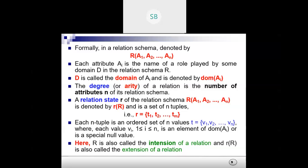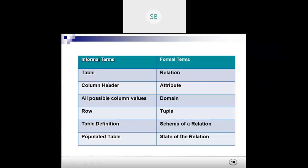To clarify the terminology: formally 'relation' and informally 'table' mean the same thing. Attribute formally equals column header informally. Domain formally means all possible column values informally. Tuple formally equals row informally. Table definition is also known as a schema. The state of a relation is basically the populated table — after you have inserted all the values, the table is crowded with data.